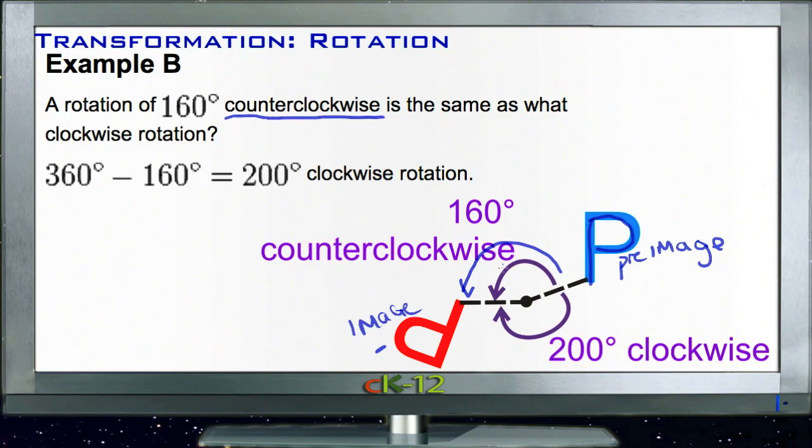then if we were to go the other direction and get to the same location, we'd have to do whatever number of degrees there is if we take 360 minus 160, which of course is 200.